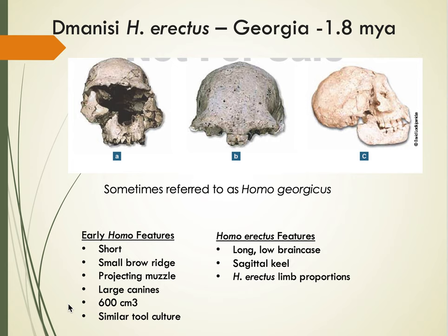These Dmanisi fossils have enough Homo erectus traits to be considered Homo erectus — the long, low brain case, the sagittal keel, and Homo erectus limb proportions — but also very early Homo features: short stature, small brow ridge, some prognathism, large canines, a small brain, and Oldowan tools similar to Homo habilis. Because they are so distinct, some have argued they should be their own species, Homo georgicus, while others argue they're simply a variation on Homo erectus, much as our own species shows enormous variation in height and body size.